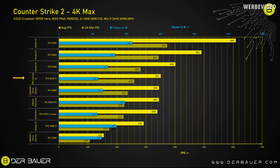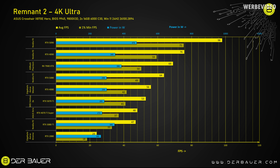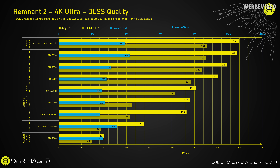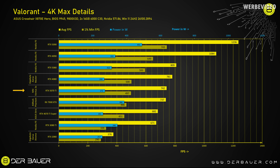In Counter Strike 2, it beats an RTX 4080 again with a slightly lower power draw. Then in Remnant 2, the 5070 Ti is again a little bit slower than the 4080 and about 10% faster than the 4070 Ti Super. I'm starting to see a pattern — once we enable DLSS, the 5070 Ti beats the 4080. That seems to be the consistent theme. And last, Valorant: slightly behind the 4080 and about 10% ahead of the 4070 Ti Super.